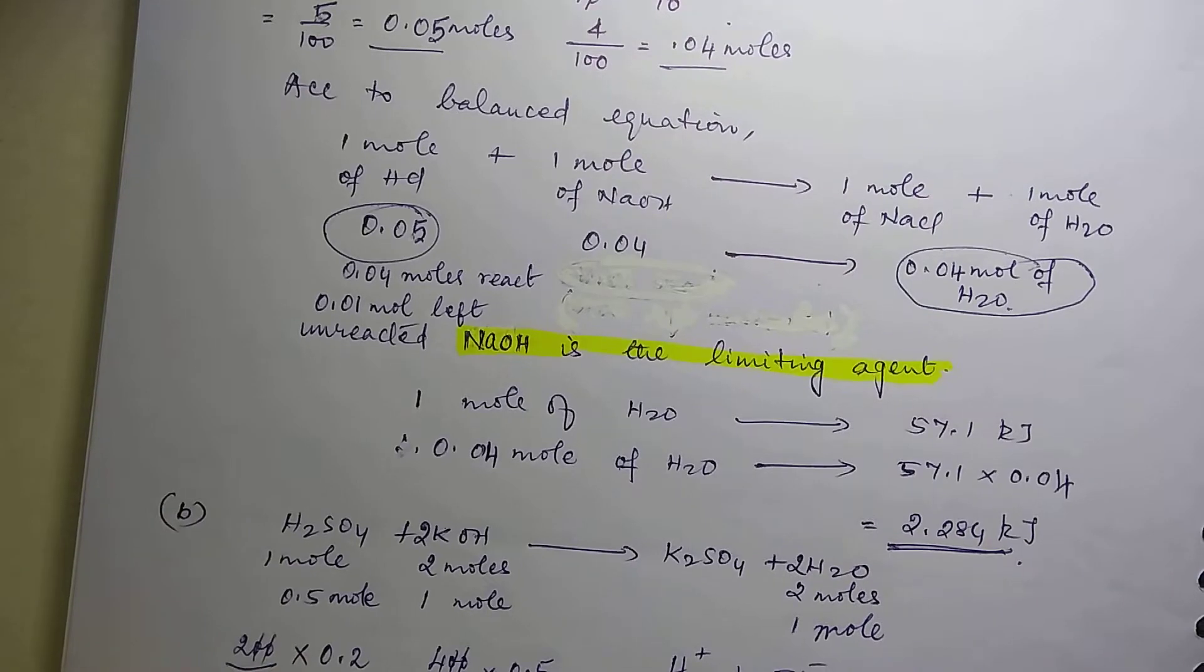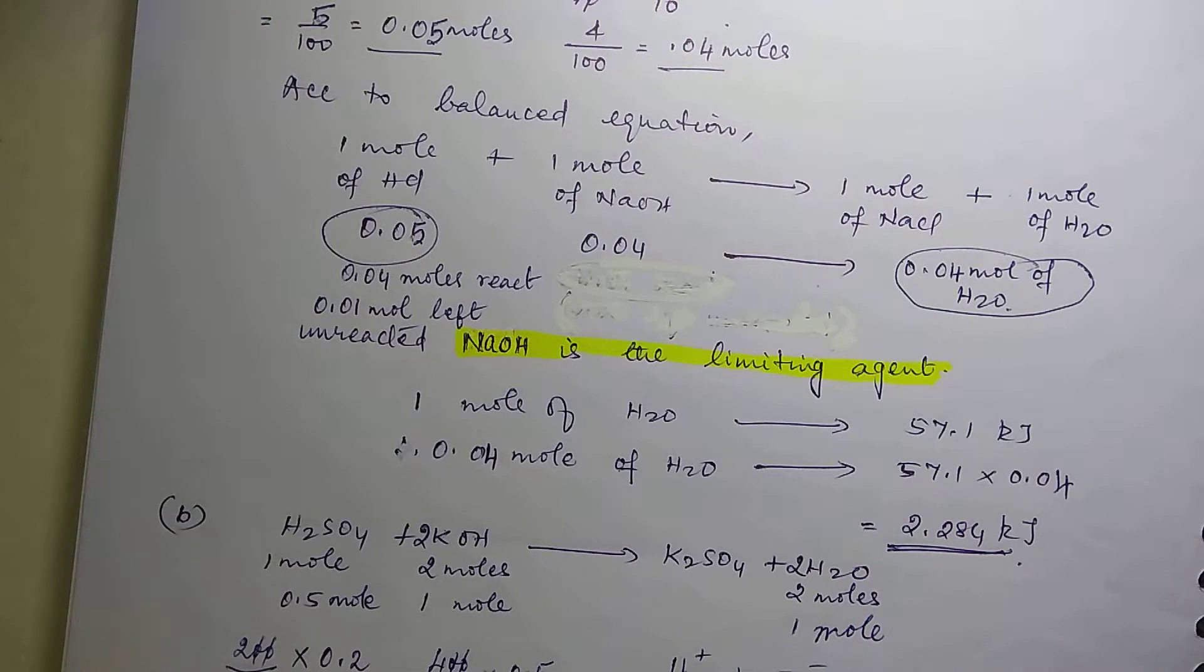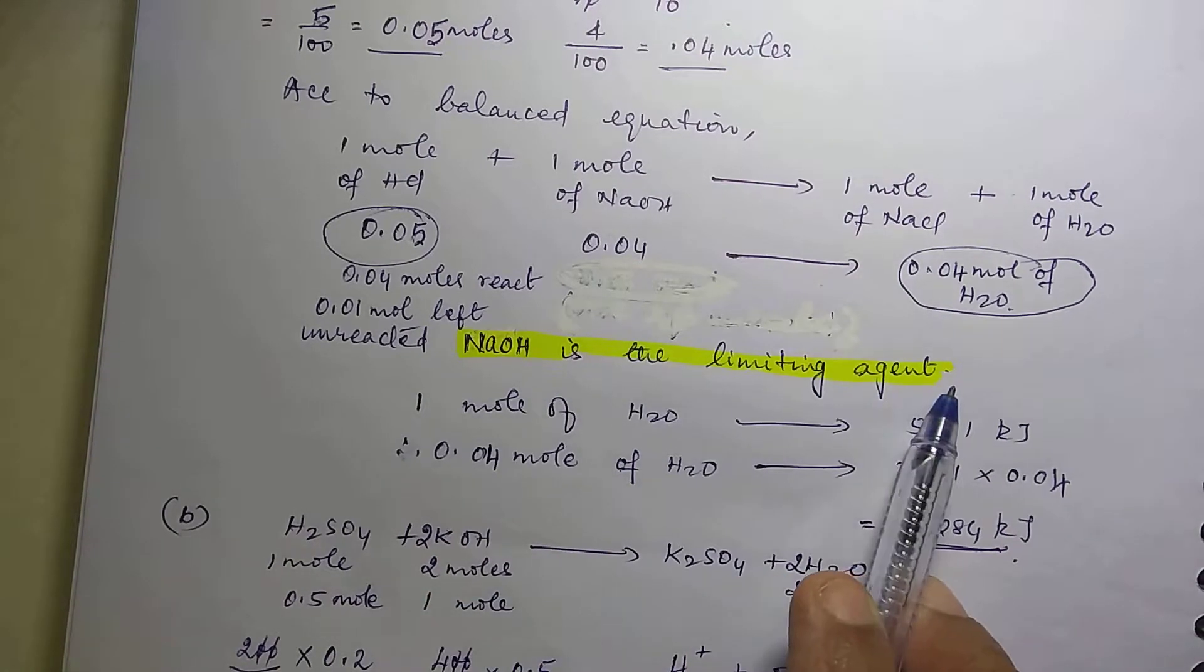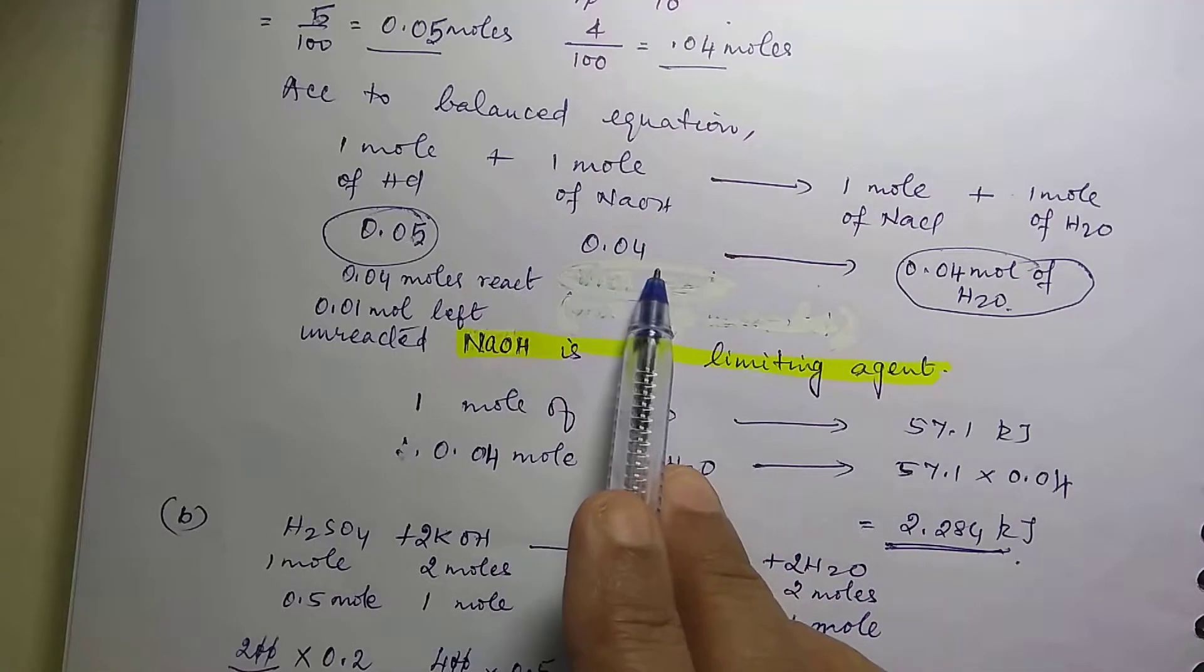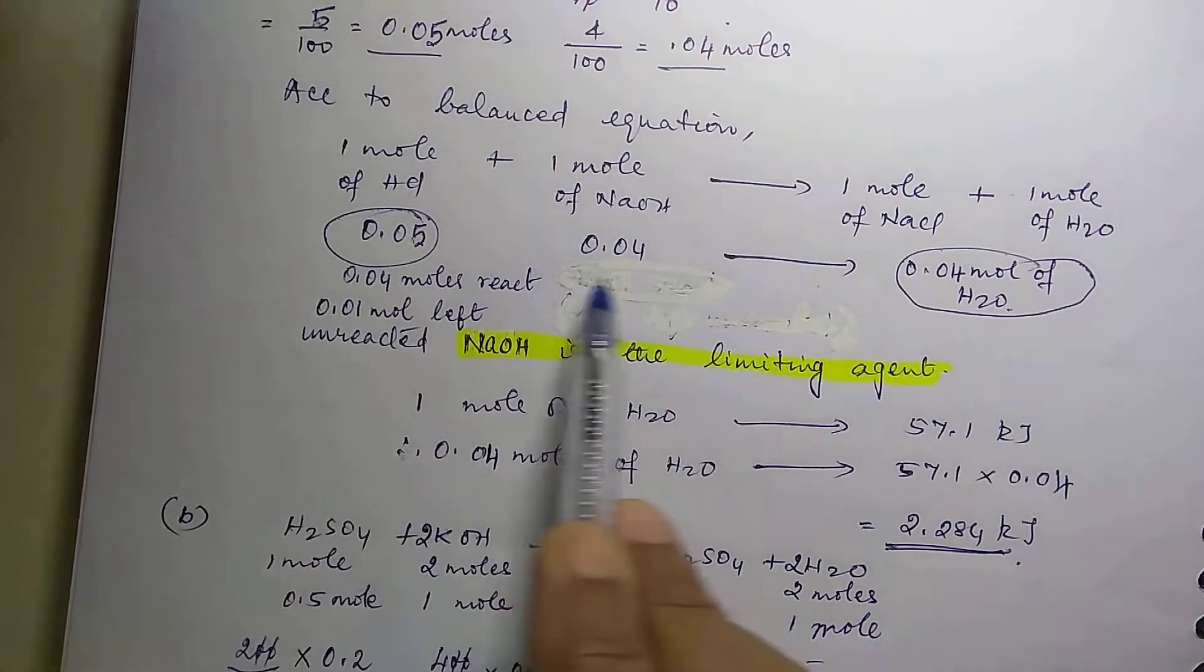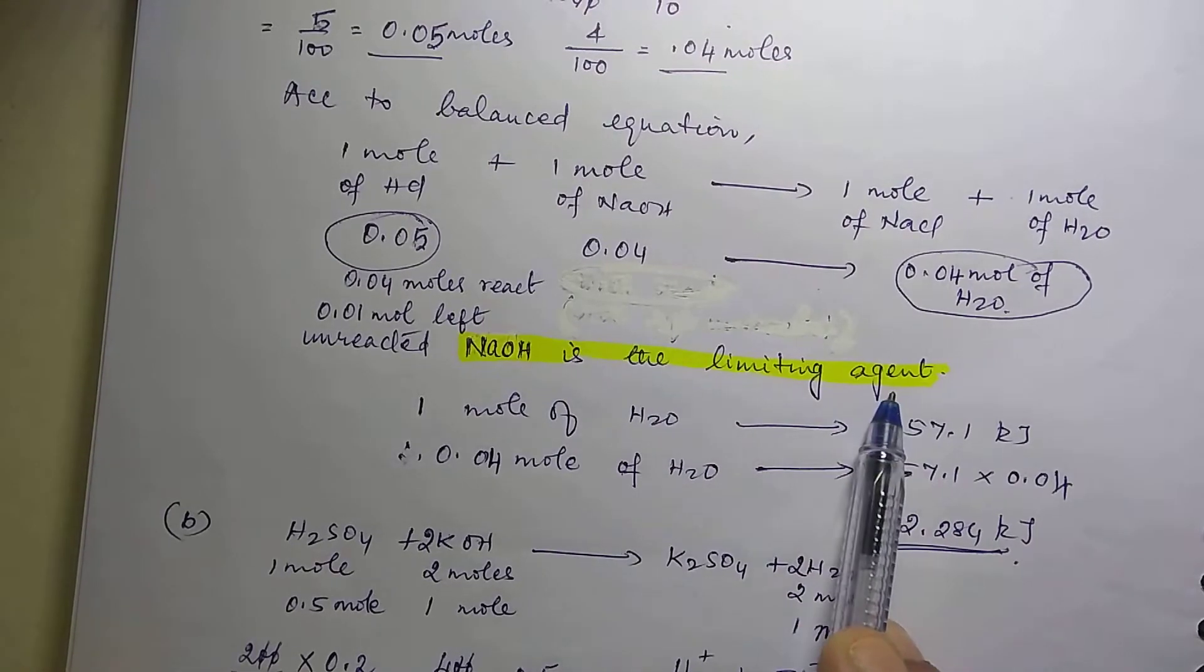Yes, let us continue dear children. I do not know why it got cut. So, we saw that NaOH is the limiting agent because whichever is present in lesser quantity will act as limiting agent. This is 0.04, this is 0.05, which is less? This is less. Whichever is less, that is the limiting agent.